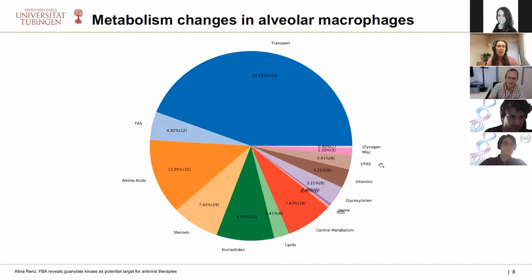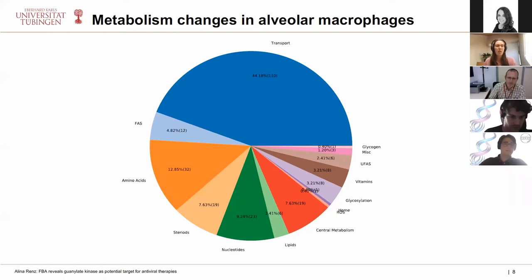Looking at metabolic changes in alveolar macrophages upon infection: when you optimize for the host maintenance function versus the viral biomass function, you get changes in different compartments and pathways — especially in transport, amino acid metabolism, and nucleotide metabolism. In total, 10% of all the reactions in the model changed when optimizing for the viral biomass objective function. This gave us a hint that metabolic changes can be targeted for antiviral therapies.